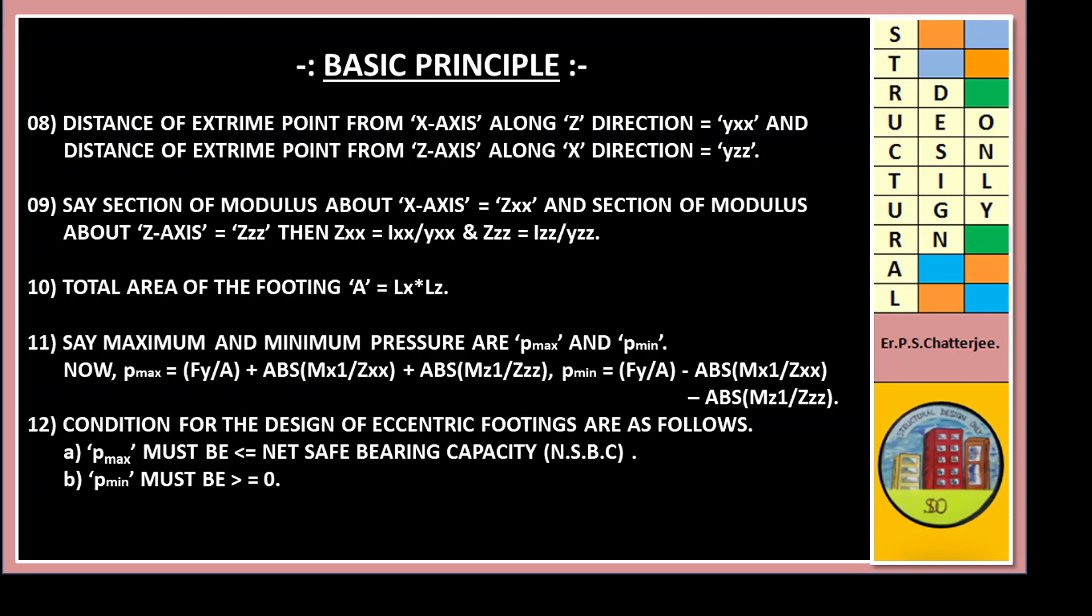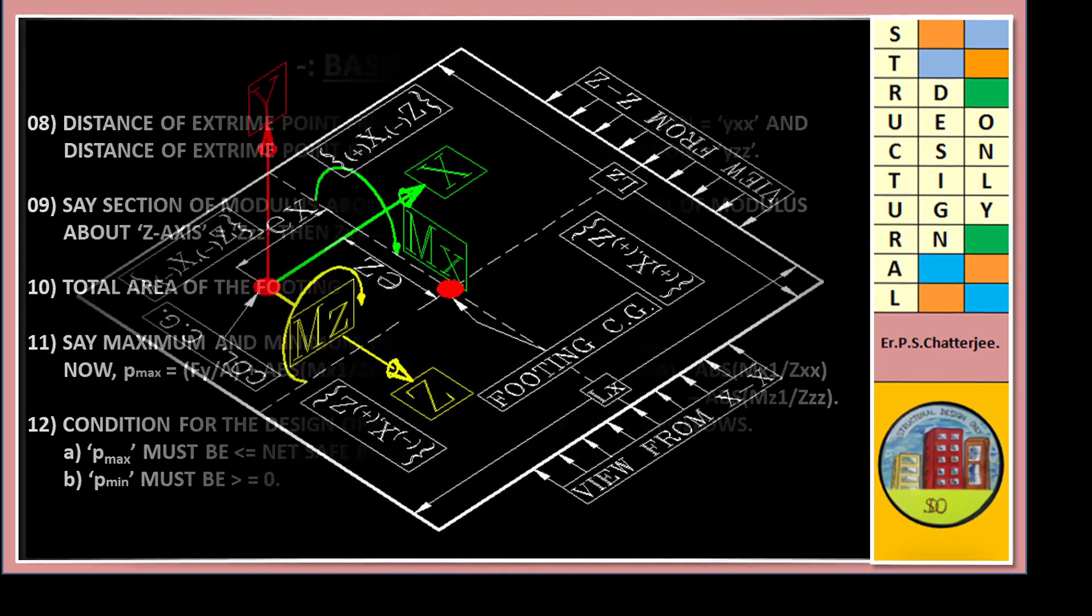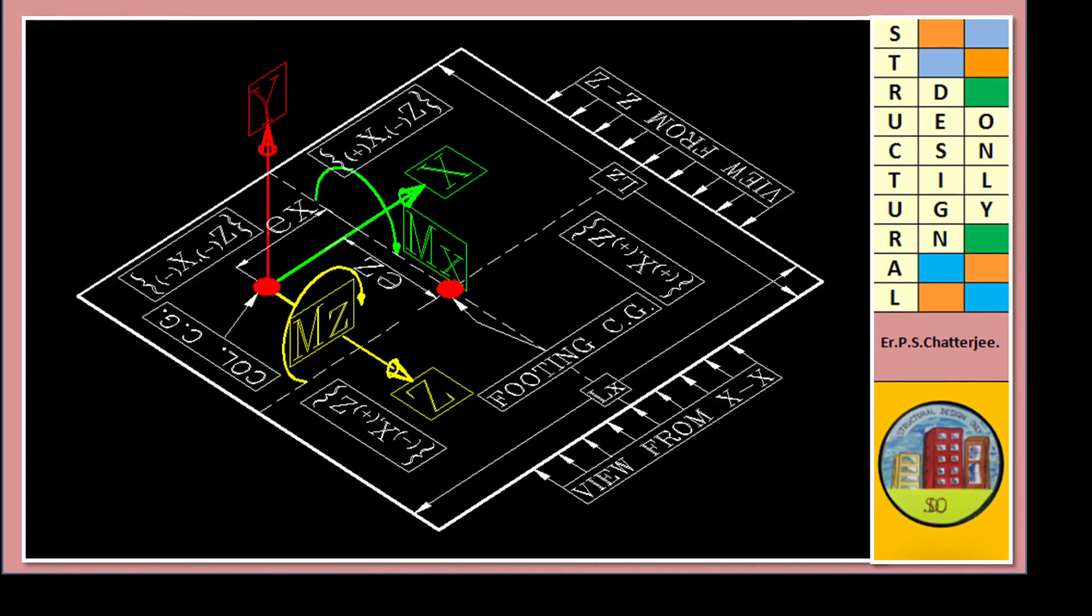Conditions for the design of eccentric footing are as follows: P-max must be less than or equal to net safe bearing capacity of soil, and P-min must be greater than or equal to zero.